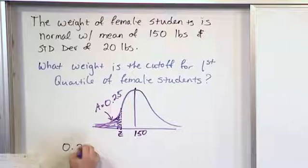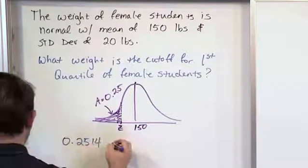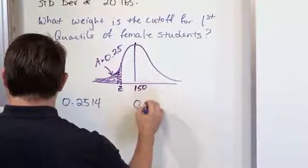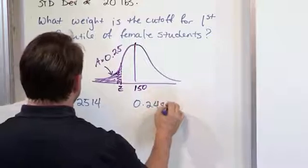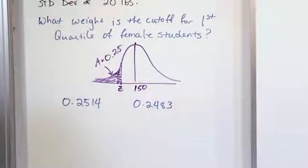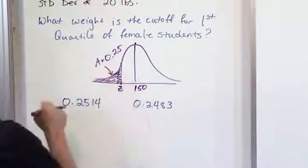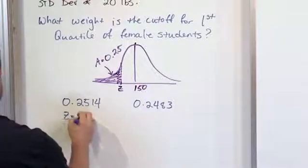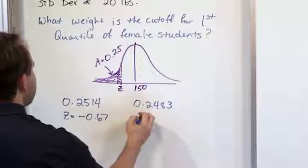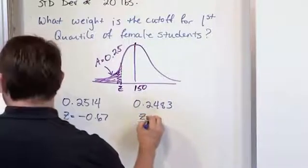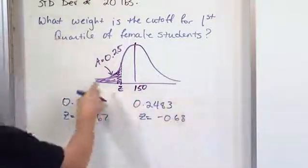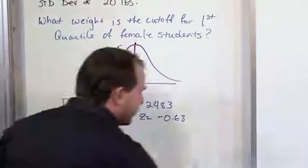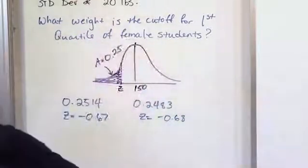What we do see is 0.2514 and we see 0.2483. And neither one of these are exactly what we want but we need to figure out which one to choose. This one corresponds to a Z value of negative 0.67. This one corresponds to a Z value of negative 0.68. Which one of these is closer? I think you'll agree after looking at it.